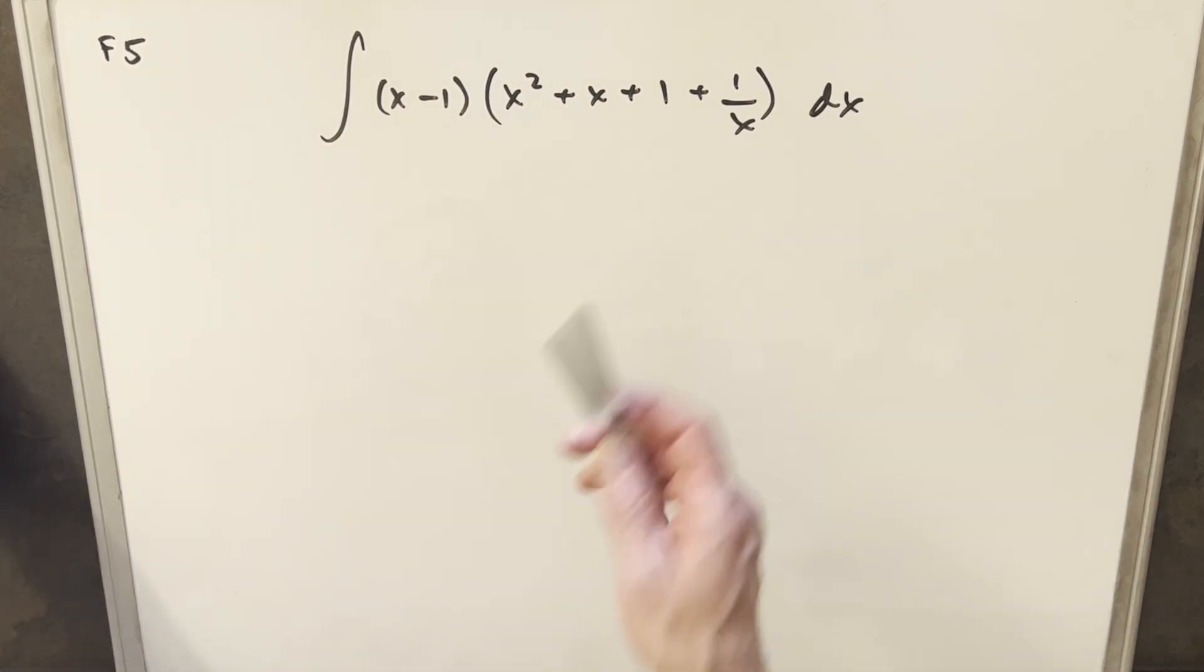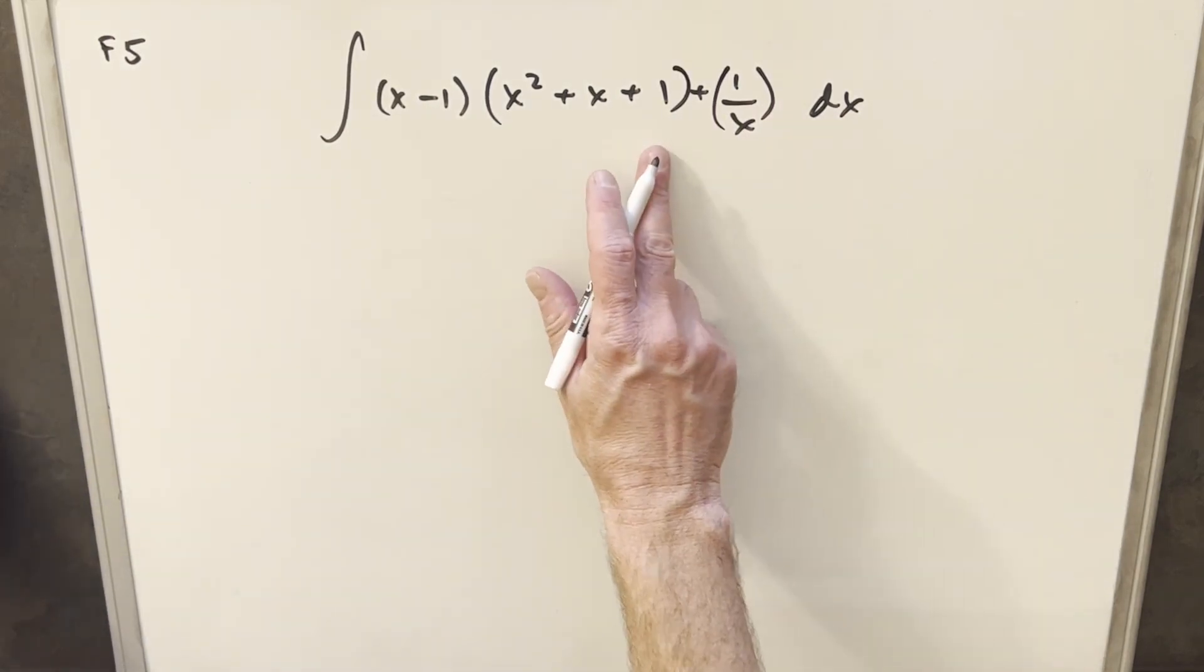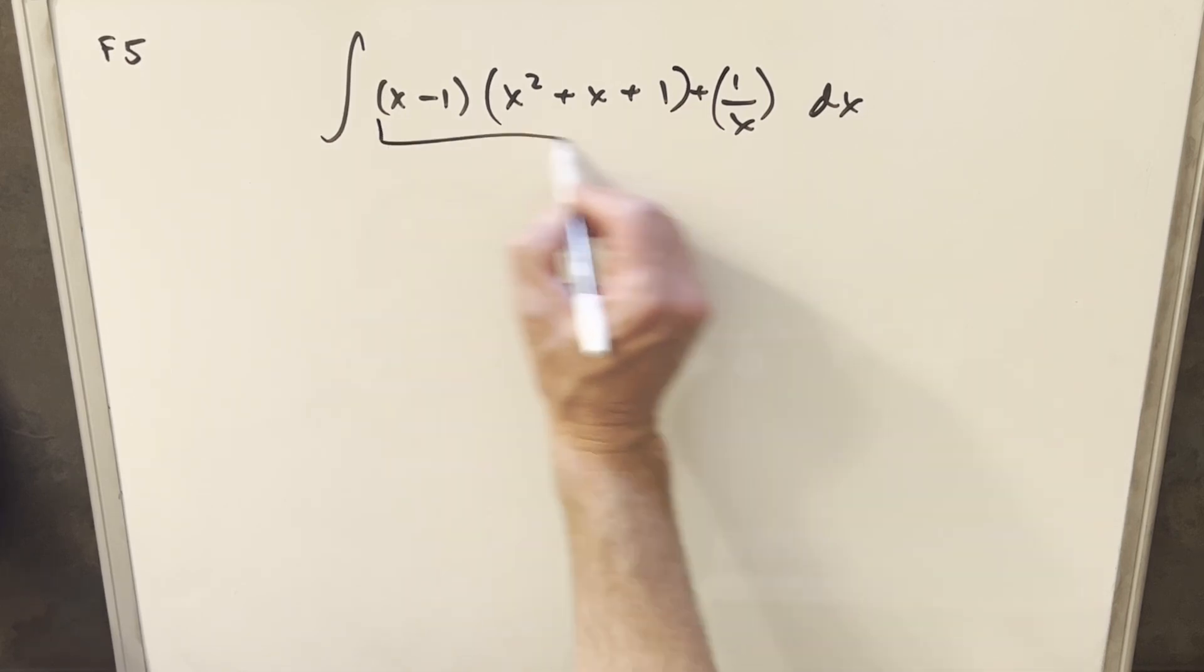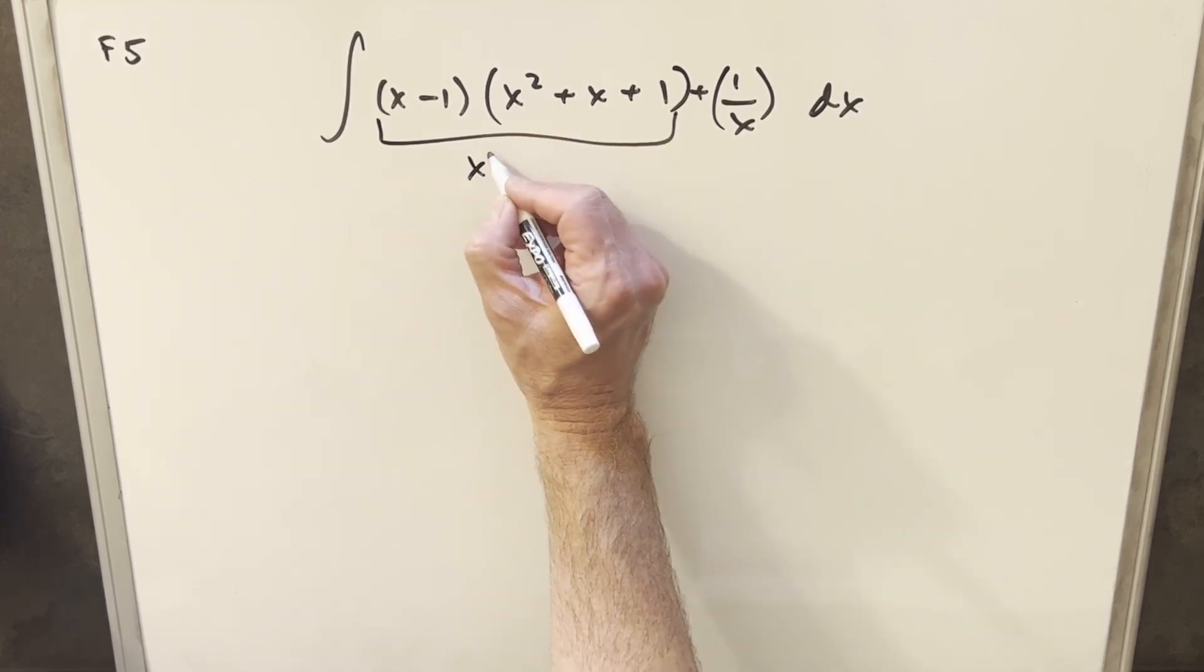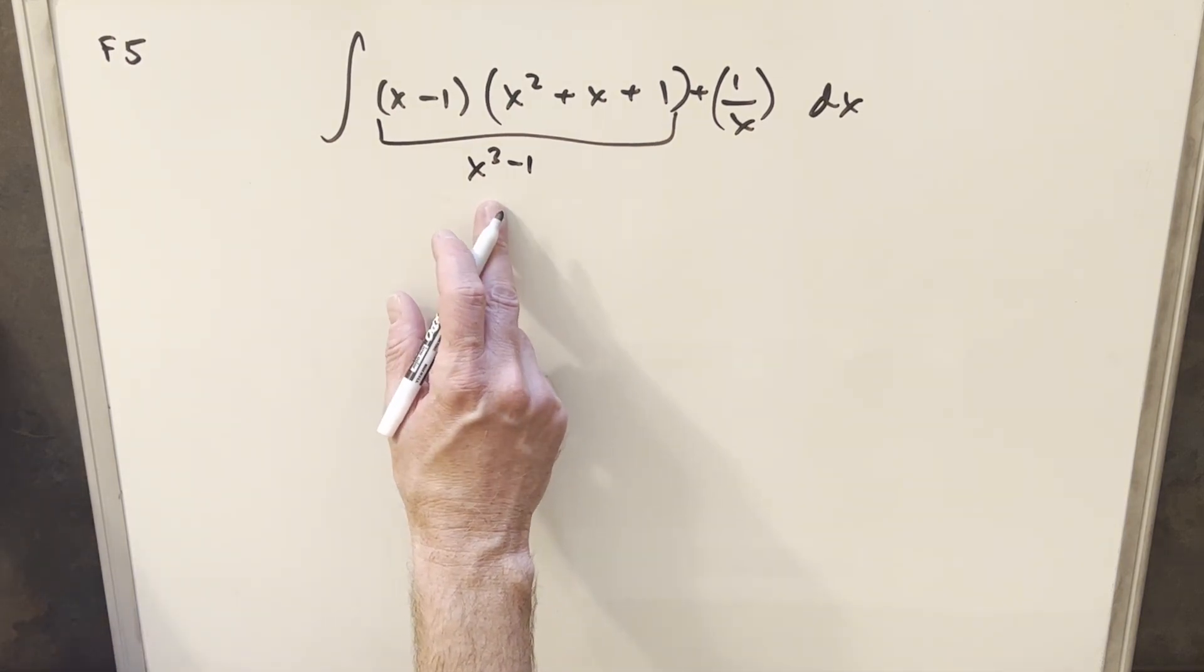Now clearly we could just distribute this and integrate and it's not going to be too bad, but the thing that did kind of jump out though is we kind of separate this a little bit and then noticing if we recognize this thing, this is the same thing as x cubed minus one. It's just a common identity for the difference of cubes.